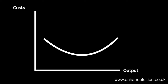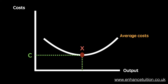We can find the point of productive efficiency on the U-shaped short run average cost curve. At point X, average costs — or costs per unit — are at their lowest. Since the firm is operating with the least amount of wasted resources, this point represents productive efficiency.